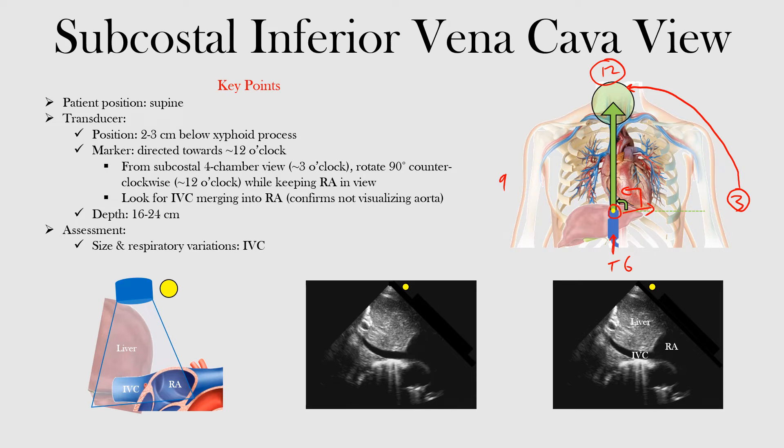You want to make sure you're keeping the right atrium in view as you make this turn — going from 3 to 12. The depth should stay about the same, between 16 to 24 centimeters. You're rotating counterclockwise from the subcostal four-chamber view toward 12 o'clock, and in this position we want to assess the inferior vena cava.